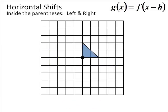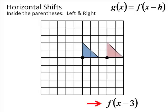Let's try something else with our little triangle. f(x - 3) means going 3 to the right — 3 to the right. And similarly, f(x + 3) in the parentheses goes to the left.